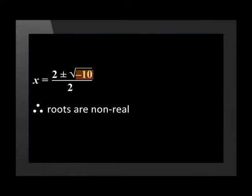Let's revise that again. The discriminant is the number under the square root sign. If the discriminant is a perfect square, the roots will be real and rational. If the discriminant is not a perfect square, the roots will be real and irrational. If the discriminant is a negative number, the square root of a negative number is imaginary, so the roots of the equation will be non-real.